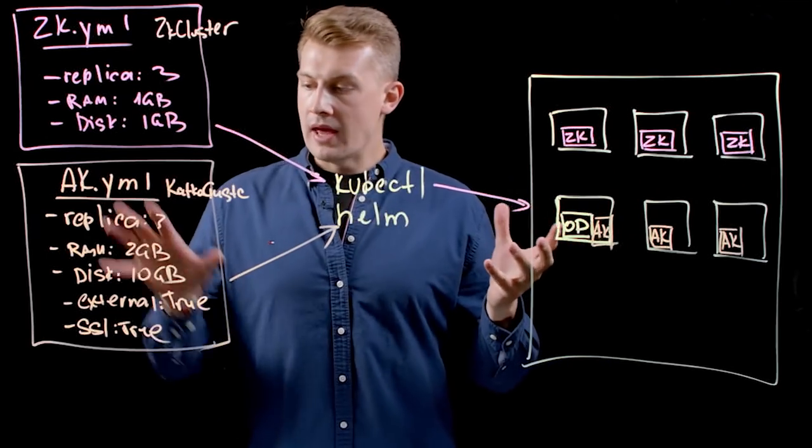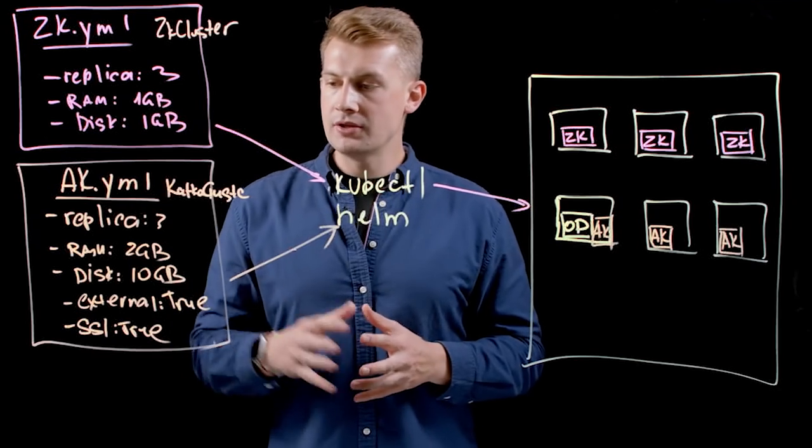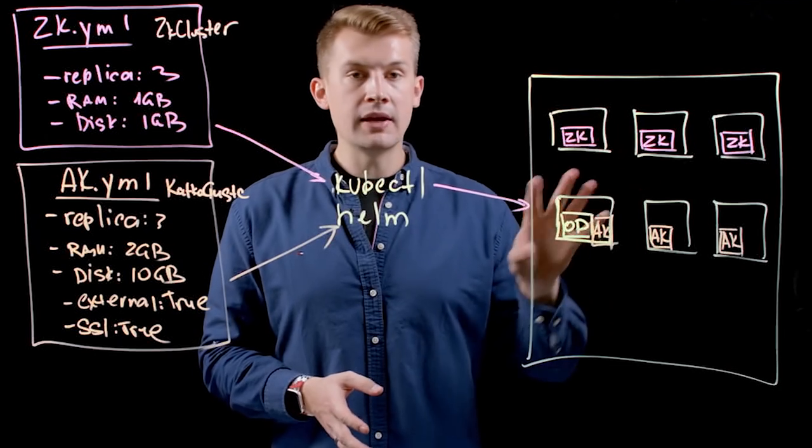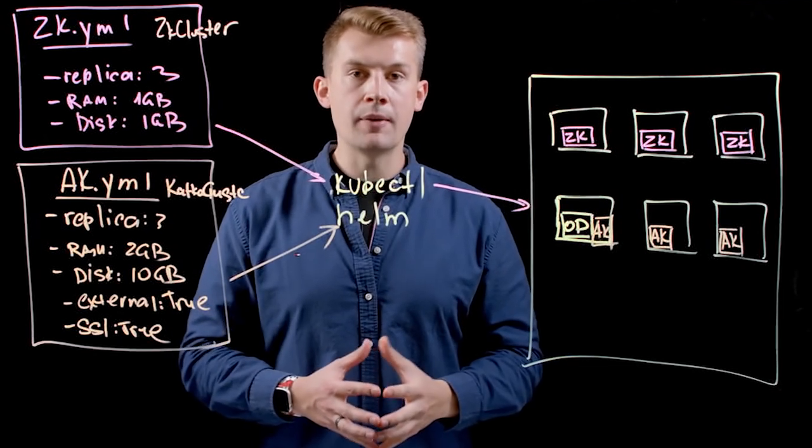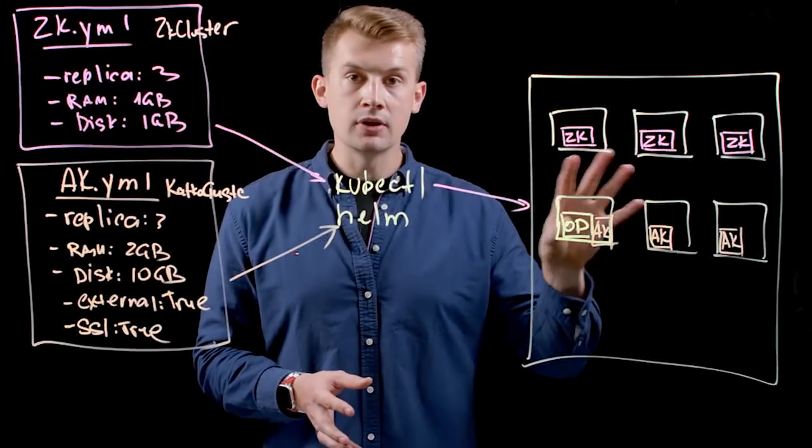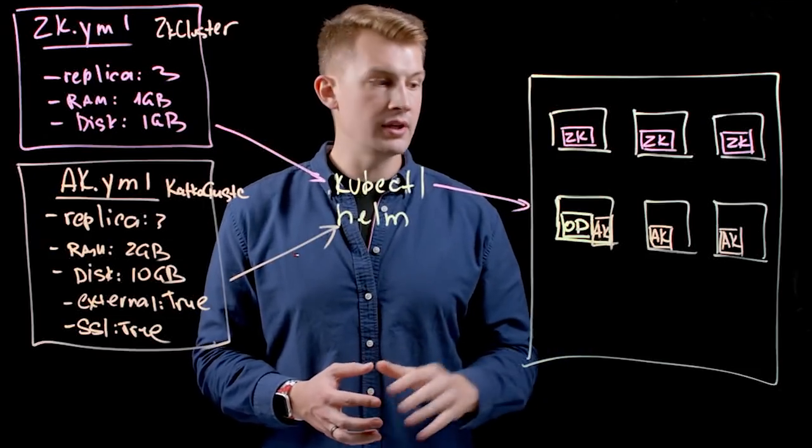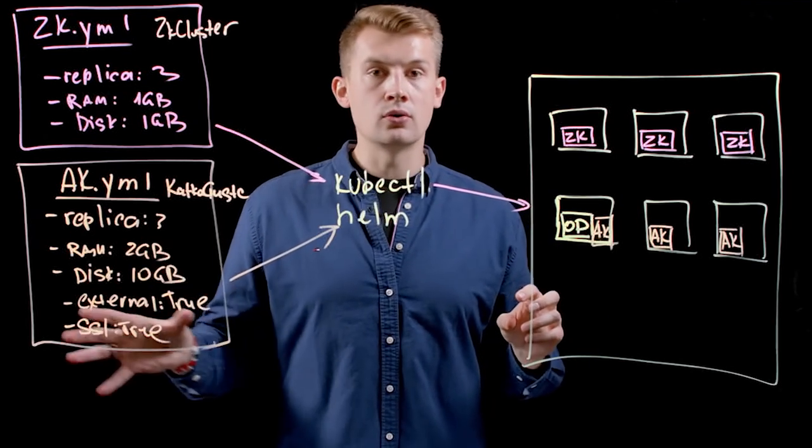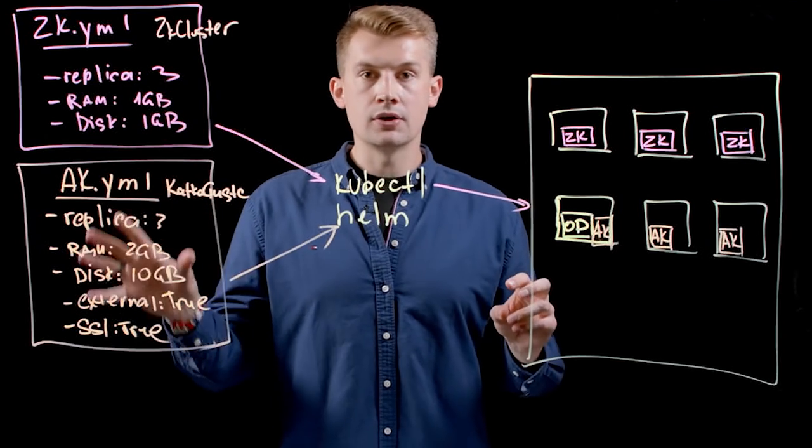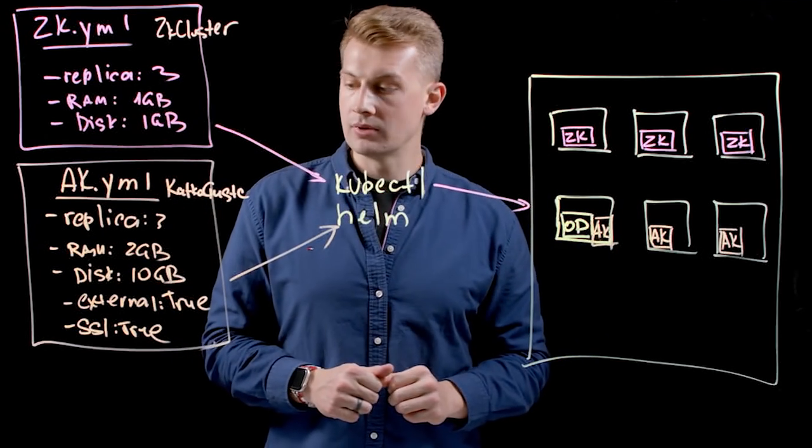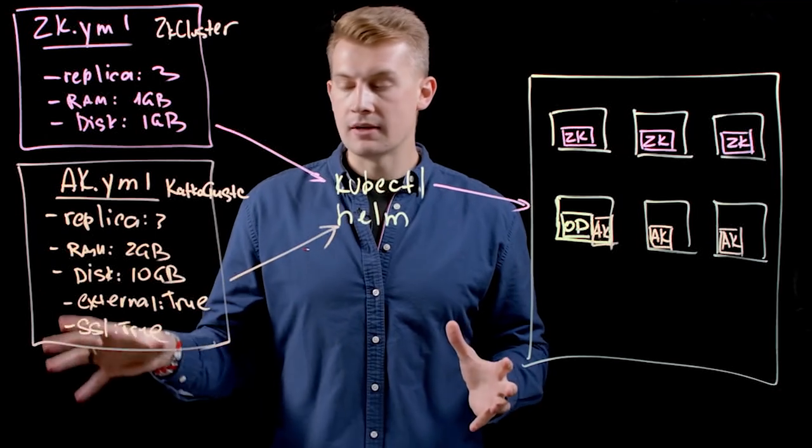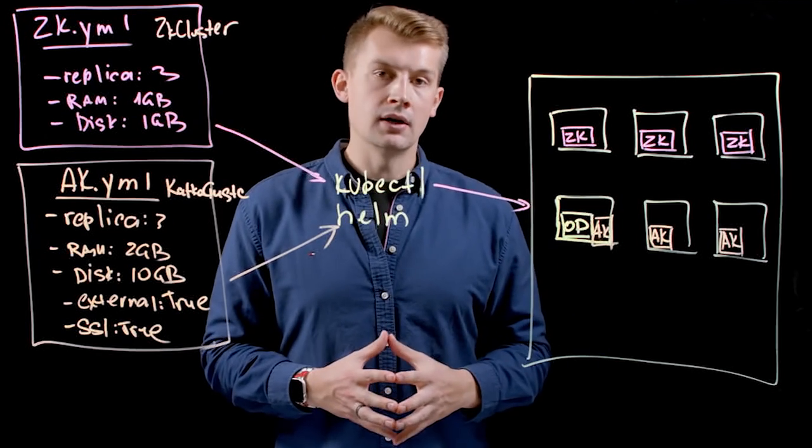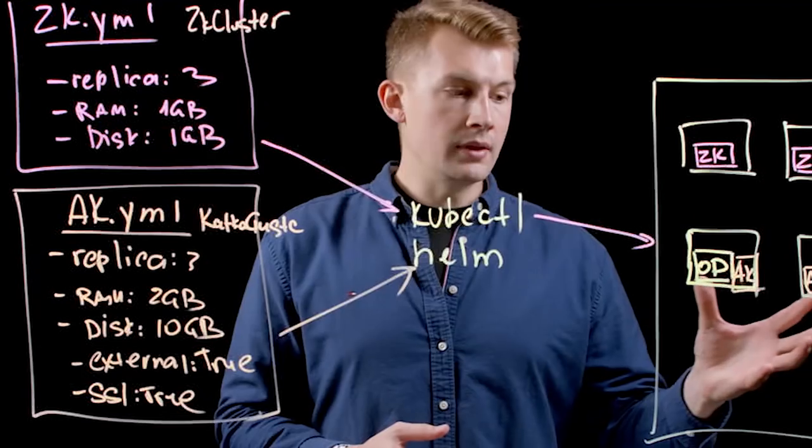Interesting aspect here that I didn't specify any zookeeper information or any connection string. Operator makes it automatically because operator will figure out that you have a zookeeper cluster up and running inside your Kubernetes and it will provide this connection string for your Apache Kafka cluster. Also, it automatically configures all required resources for your Kubernetes to access this cluster externally, provide some of the security including SSL for wire encryption communication between Kafka brokers and between Kafka clients.